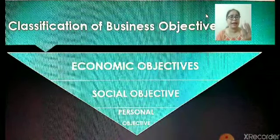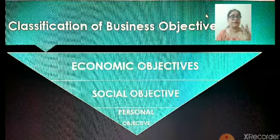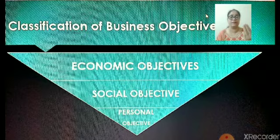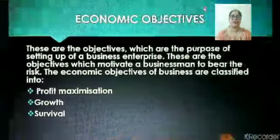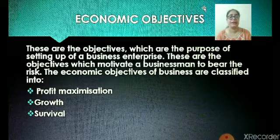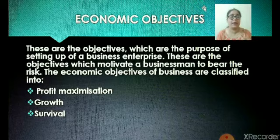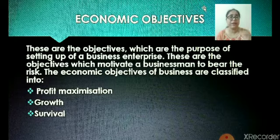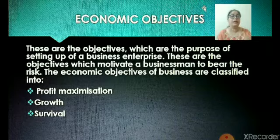The business objectives are classified into three categories: the economic objectives, the social objectives, and the personal or human objectives. Now let us see what the economic objectives are. These are the objectives which are the purpose of setting up a business enterprise. These are the objectives which motivate a businessman to bear the risk, because a business is set up especially for the purpose of achieving the economic objectives, as these are the main purpose for which the business has been established. These economic objectives are further classified into profit maximization, growth, and long-term survival.